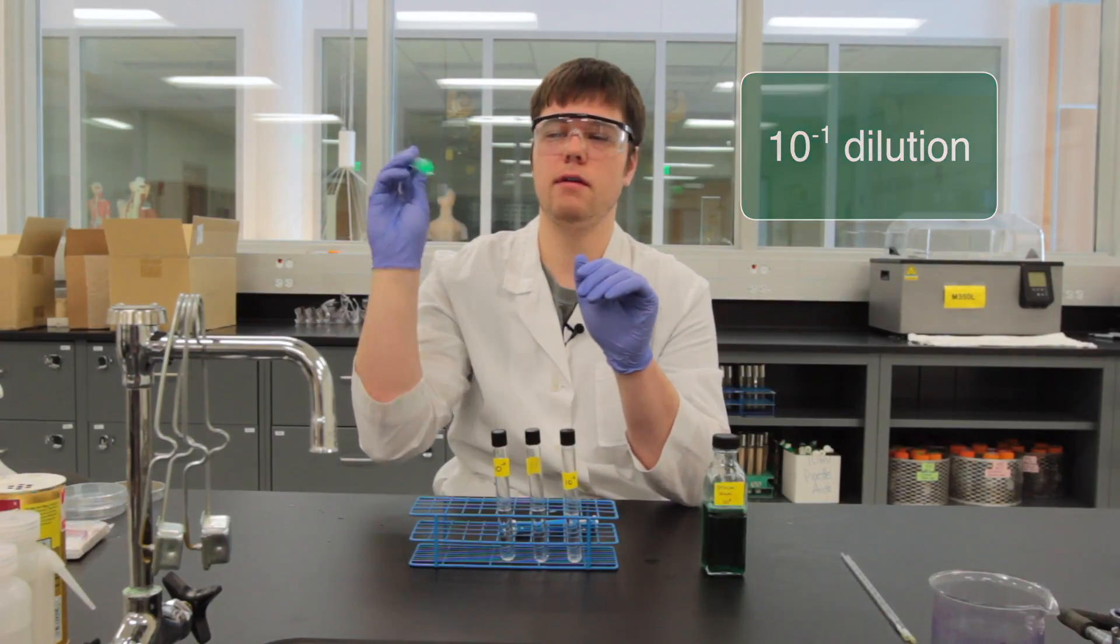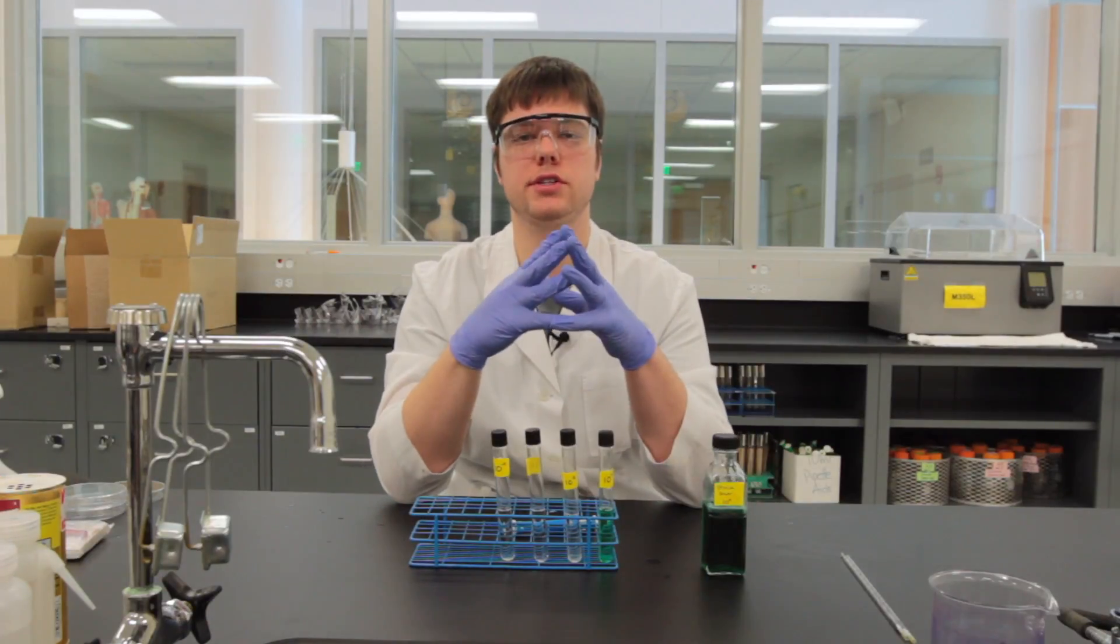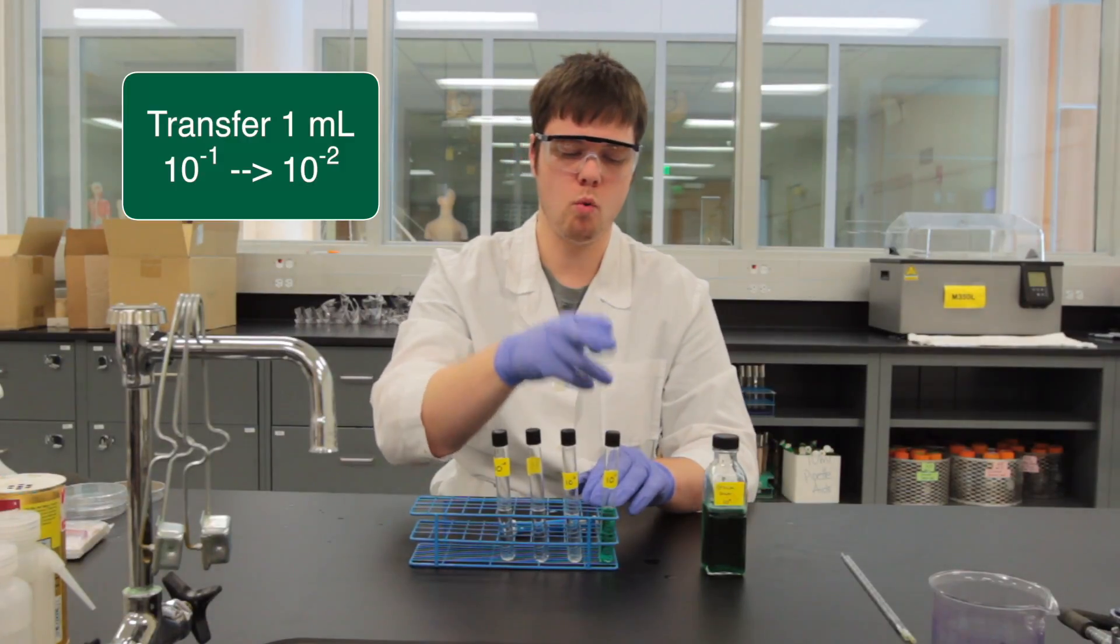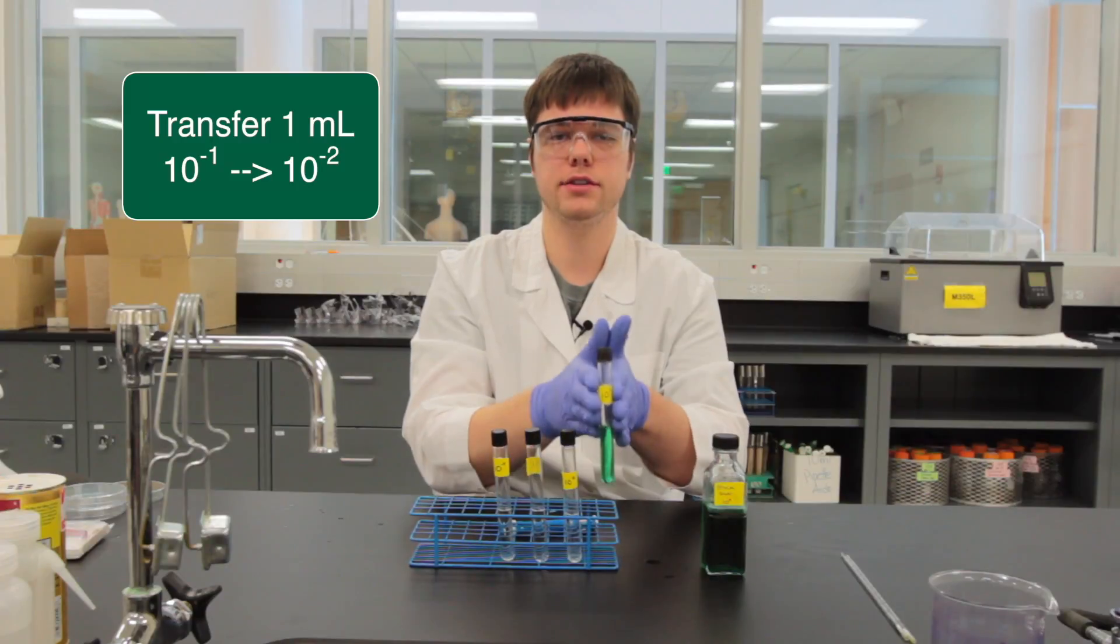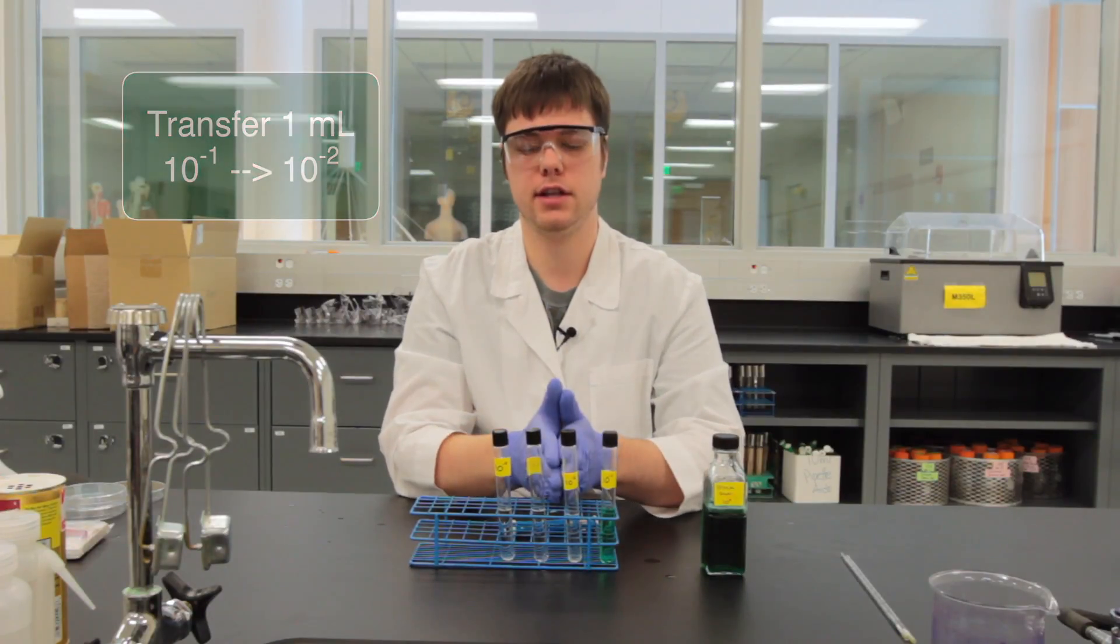So we've shaken this up very well. We're going to repeat what we just did. We're going to add 1 mil from our 10 to the negative 1 tube and put it in our 10 to the negative 2.